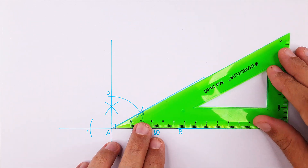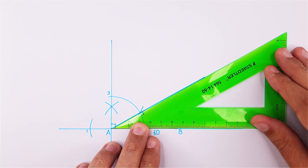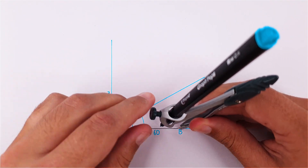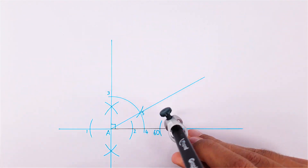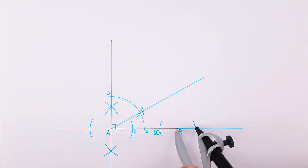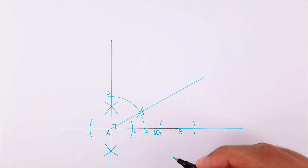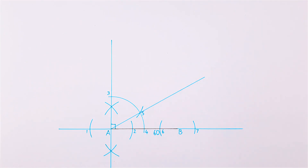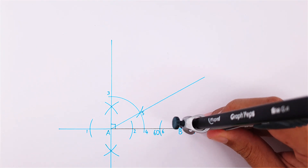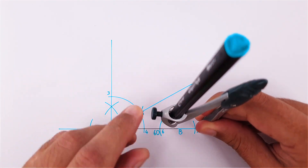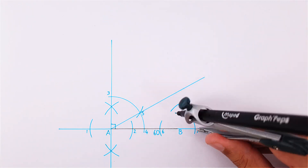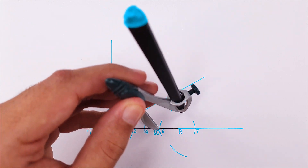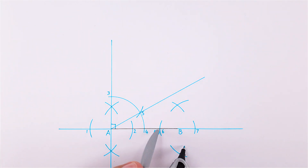Next we will draw our second perpendicular bisector on point B following the same steps as on point A. Place your compass on point B and draw an arc on both sides using the same measurement. Label the intersecting points as point 6 and 7. Using these points, adjust your compass to more than half the distance to the opposite point and draw an arc above and below point B. Do the same on the opposite point and complete your perpendicular bisector.